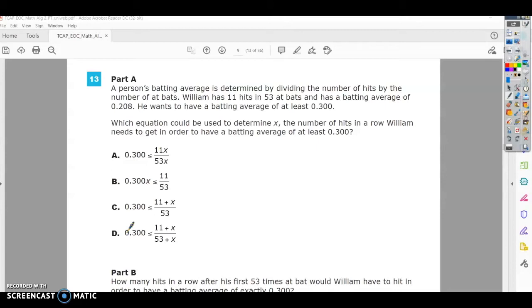We know that to begin with we have 11 over 53, and his current batting average is 0.208. We're trying to determine which one of these inequalities would help him get to 0.3, so we can determine how many hits he needs when he's up at bat to get this batting average.